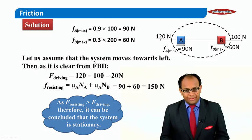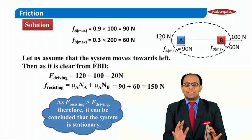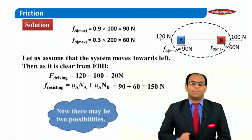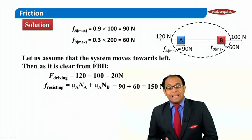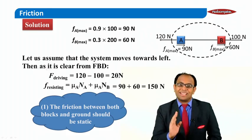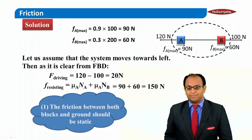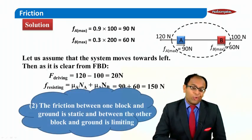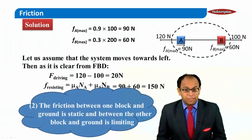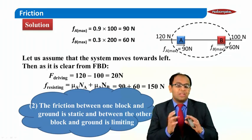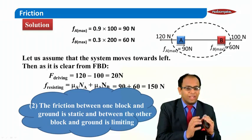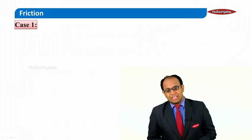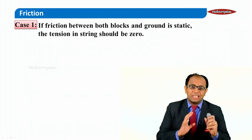Since our assumption that both A and B move is incorrect, the next possibility is that A and B don't move. When A and B don't move, there are two sub-possibilities: one is that friction is static for both A and B, meaning friction is less than the limiting friction for both. The second possibility is that friction reaches its limiting value for one block but is below limiting for the other.